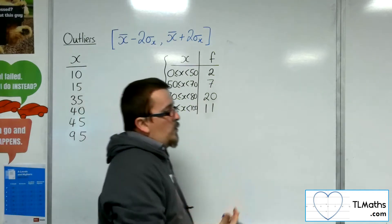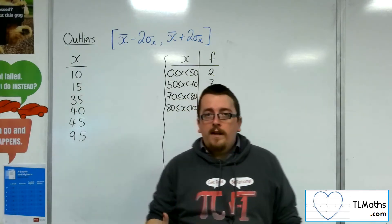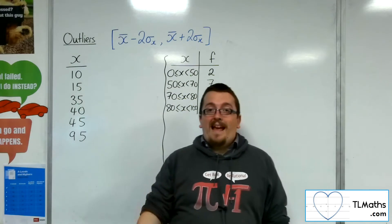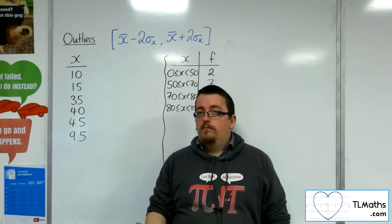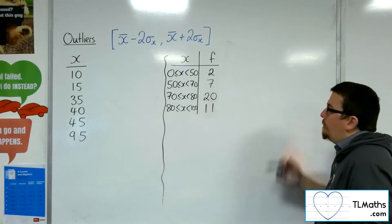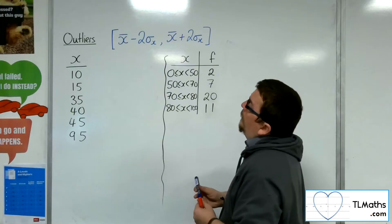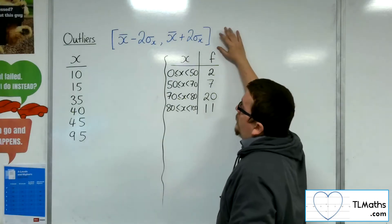If you are studying OCR-MEI, then you would be using Sx here, the sample standard deviation. So just so we're clear, this is how we can find outliers.